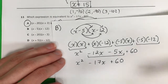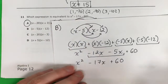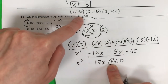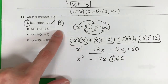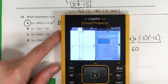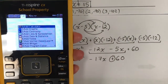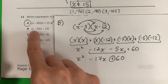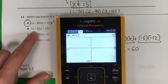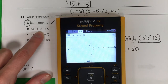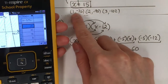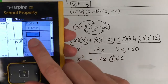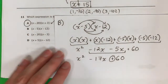Let's check — is this the same? No, because here it's plus 60, and I want minus 60. So this is not correct. Let's go ahead and check in the calculator. I put in parenthesis x minus 5, parenthesis, times parenthesis x minus 12, parenthesis, enter. Control T for the table. Is 1 with negative 76? No, it's 44. So B is not correct.